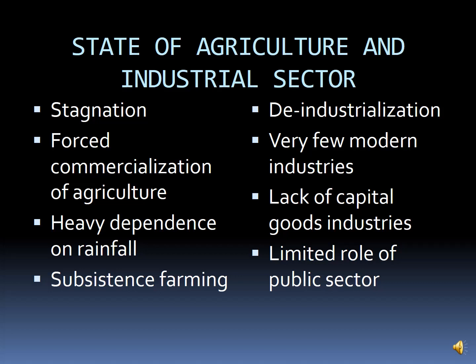Our farmers were forced to produce cash crops rather than food crops. The Britishers forced commercialization of agriculture for their own benefit — our agricultural produce and cash crops served as ready raw material for British industry. The agricultural sector was heavily dependent on the vagaries of nature and rainfall. India was also suffering from subsistence farming, which means the productivity was only sufficient to feed the farmers themselves, and they were not able to produce a surplus that could be marketed.